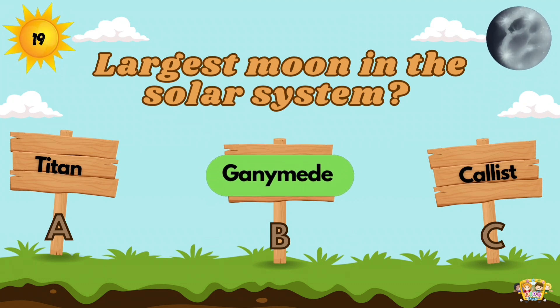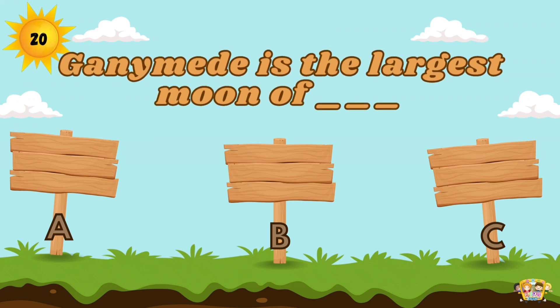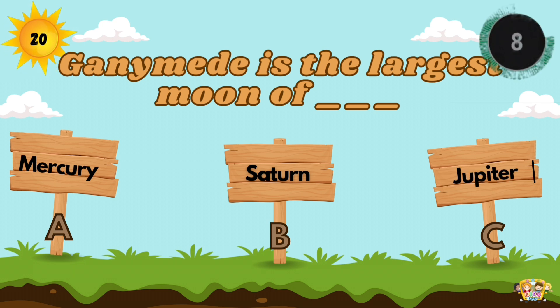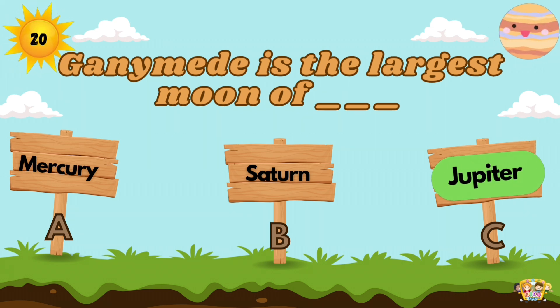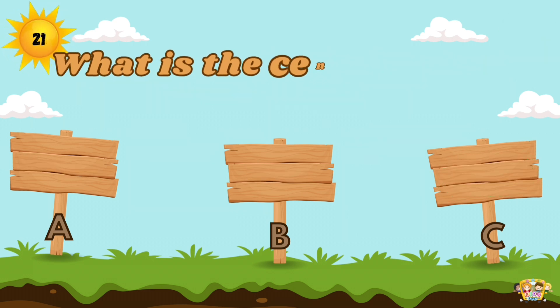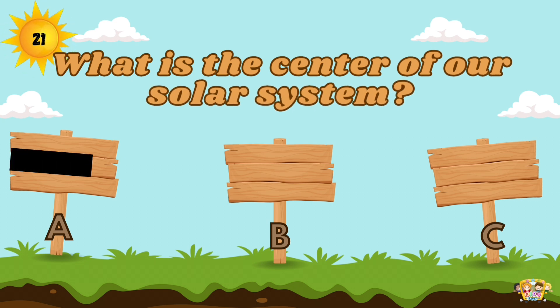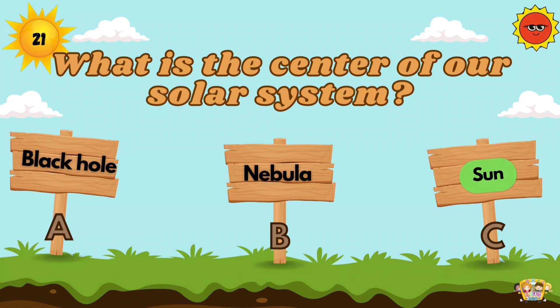What is the largest moon in the solar system? Ganymede is the largest moon in our solar system. Ganymede is the largest moon of Jupiter. What is the center of our solar system? Sun is the center of our solar system and its gravity holds the solar system together.